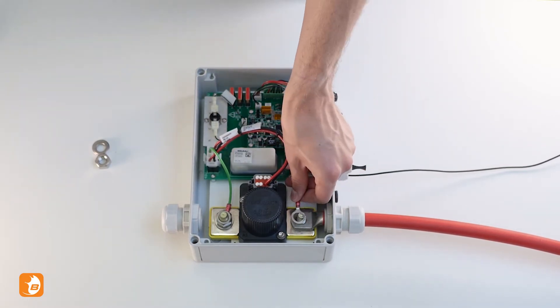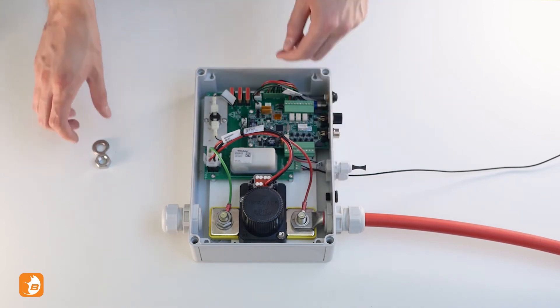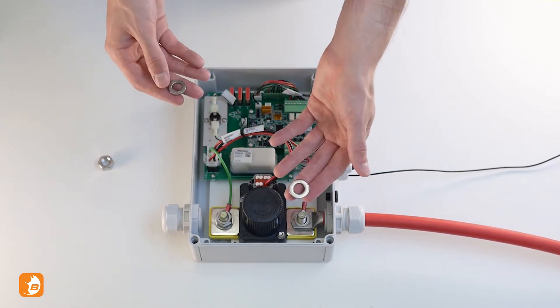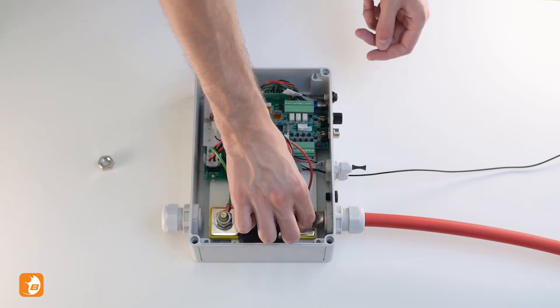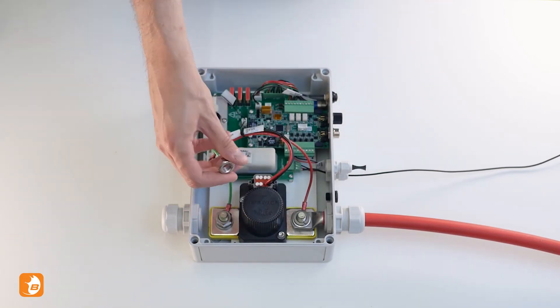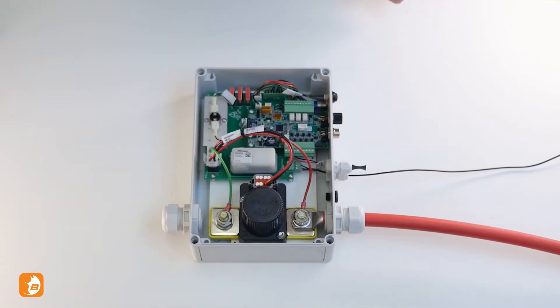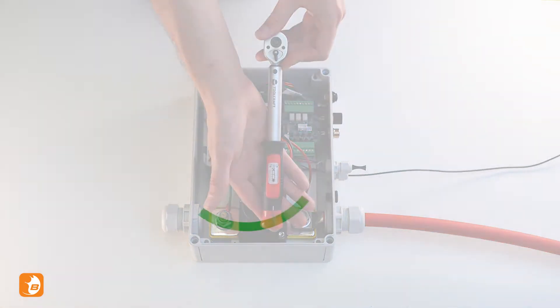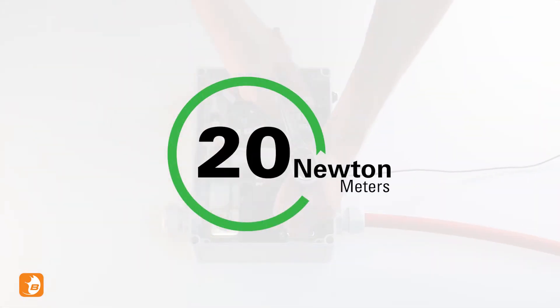Place your power cable, washer, spring washer, and nut on the terminal. Tighten the nut to 20 Nm using a torque wrench.